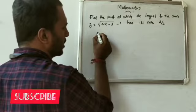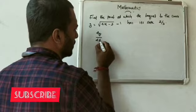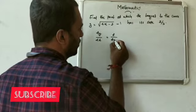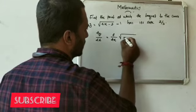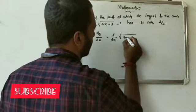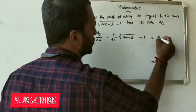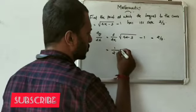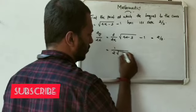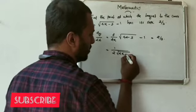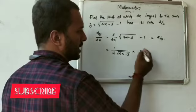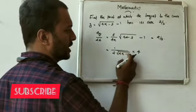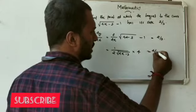Slope is dy by dx. dy by dx is equal to the derivative of root of 4x minus 3 minus 1, which equals 2 by 3. The derivative of root x is 1 by 2 root x, so 1 by 2 root of 4x minus 3 into 4 is equal to 2 by 3.